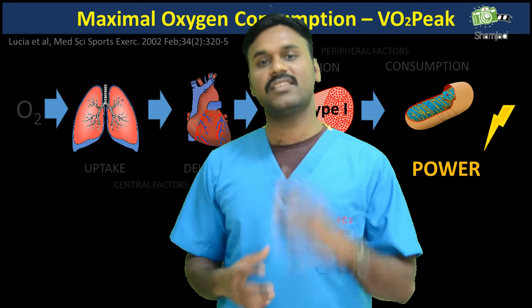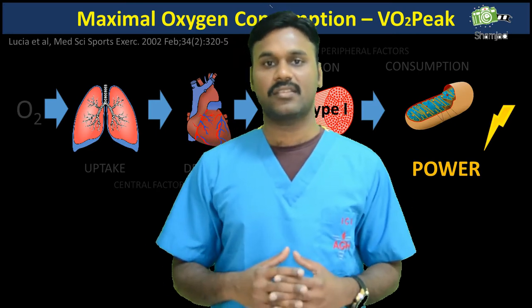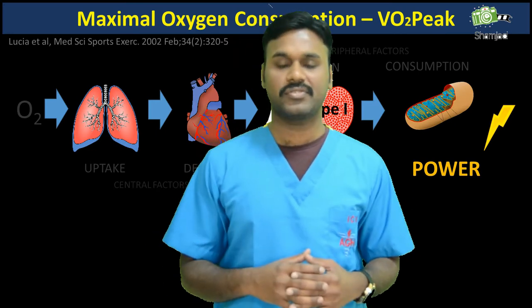SVO2 helps us determine whether cardiac output and oxygen delivery are good enough to meet the patient's needs. It can be very useful to measure before and after changes are made to cardiac medications or mechanical ventilation, especially in unstable patients. The normal value of mixed venous oxygen saturation is 60 to 80%.